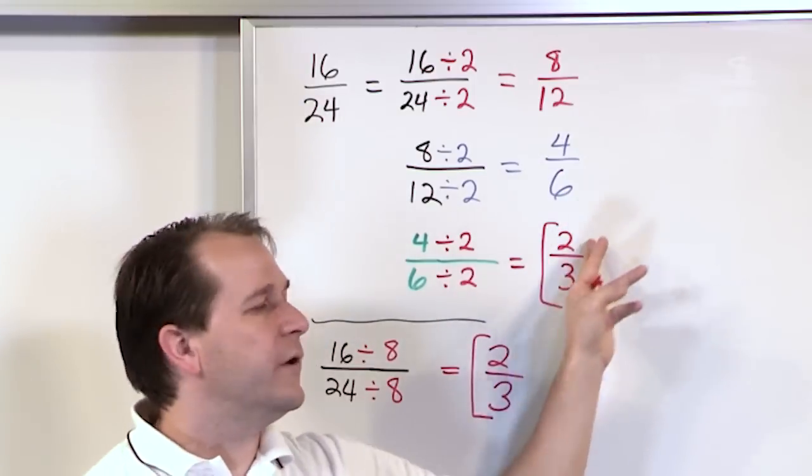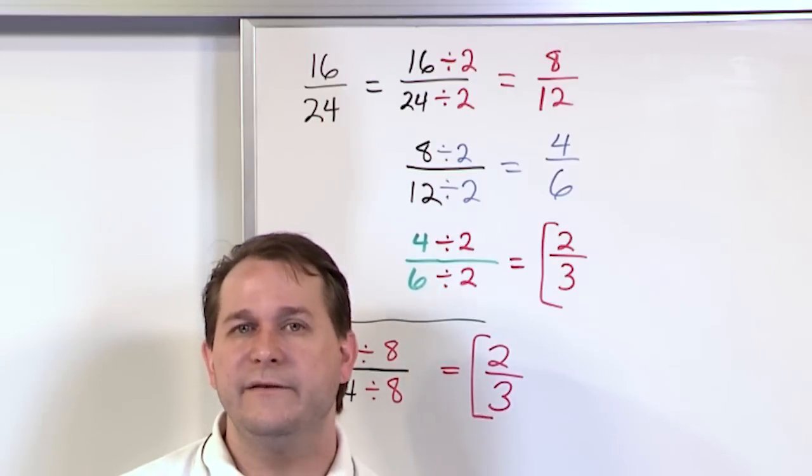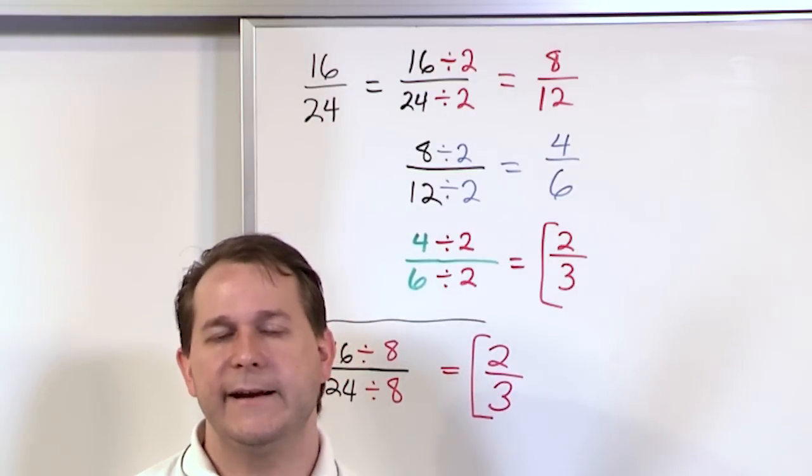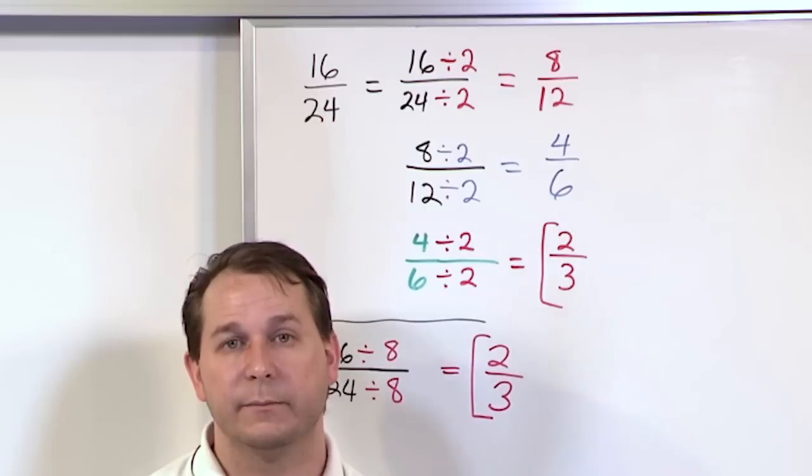But sometimes when you do it especially with large numbers like 16 over 24 what you'll find when you start dividing by 2 is that you can keep doing it again and again. And that's fine. Just keep doing it until you get down to the point where the answer is completely simplified.